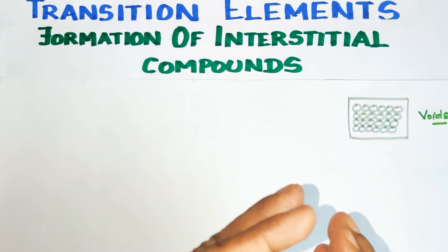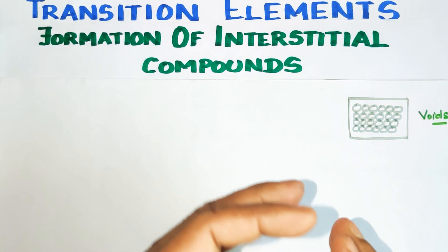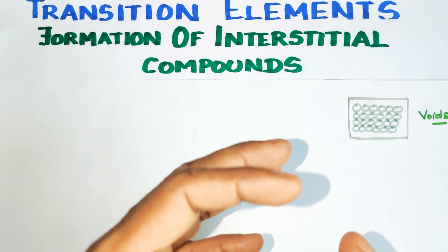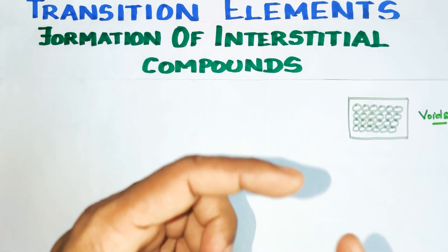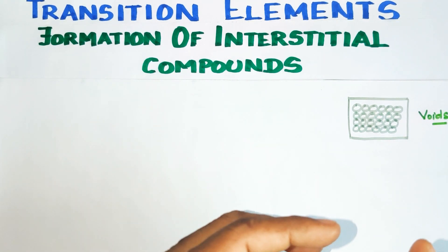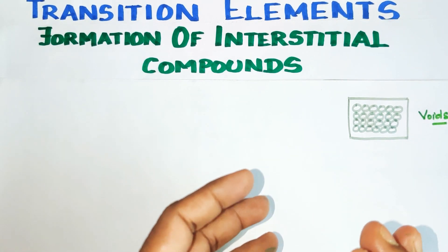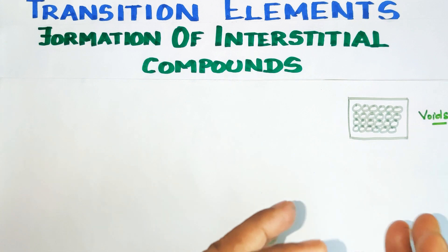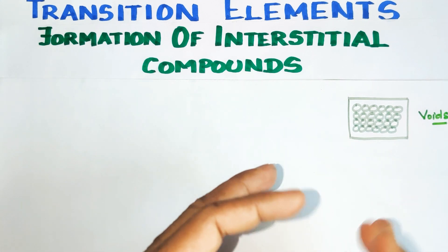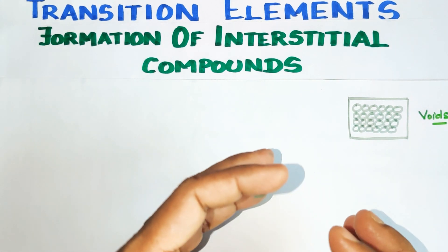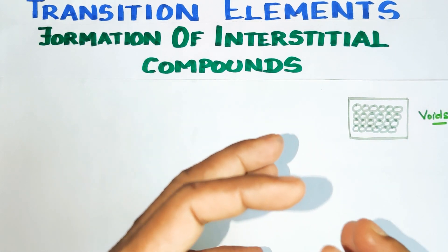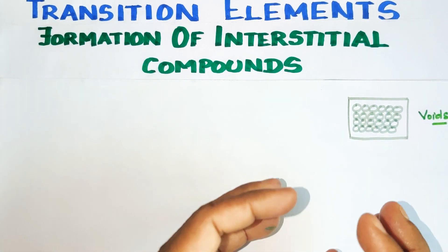The tetrahedral void: there is a hole surrounded by four atoms. The octahedral void: there is a hole surrounded by six atoms — that is a hole in six metal atoms.